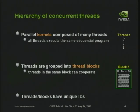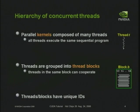The first abstraction is the hierarchy of concurrent threads. CUDA is fundamentally a SPMD-style model — single program, multiple data. A CUDA program consists of a normal sequential program running on the host CPU, and it is capable of launching parallel kernels. These kernels execute a single program across many, many concurrent threads.